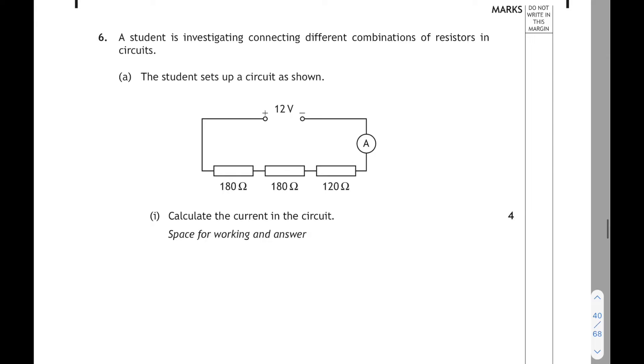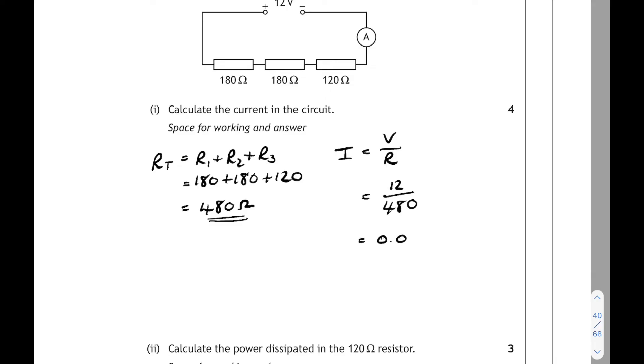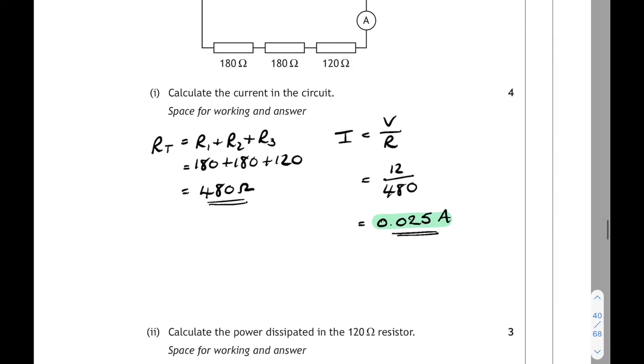Question 6. Still on electricity. A student is investigating connecting different combinations of resistors and circuits. We've got a series circuit here with three series resistors and we have to calculate the current in the circuit. So first thing we need is the total resistance in series. You just add them together. That's 480 ohms. And then the current will be the supply voltage 12 over the total resistance which is 480. And we get an answer of 0.025 amps. Four marks there. One mark for finding the total resistance.